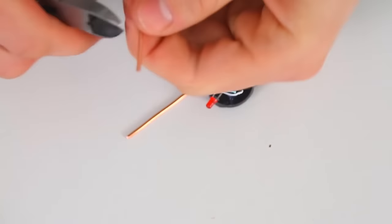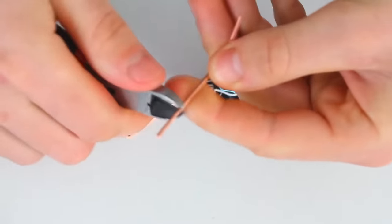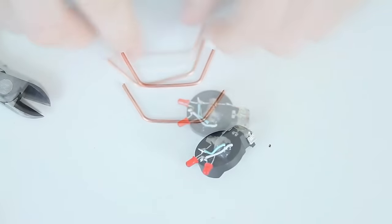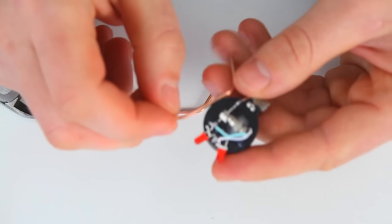And as a last detail, we will make some legs for our robot. They should look something like this. Now, we glue them carefully using hot glue.